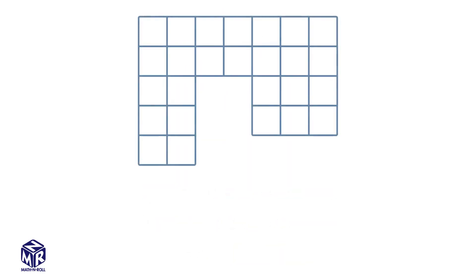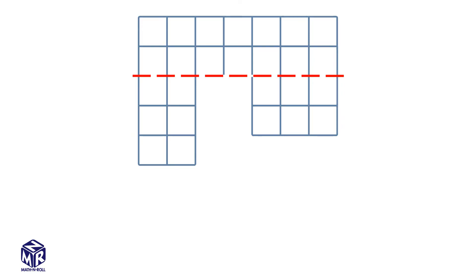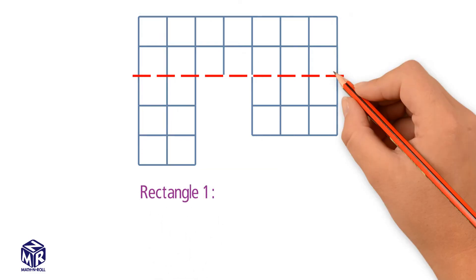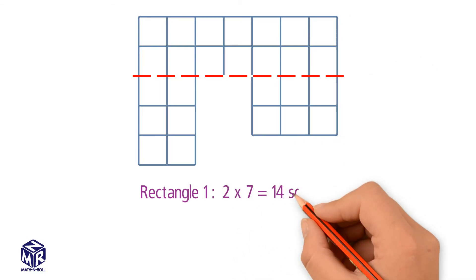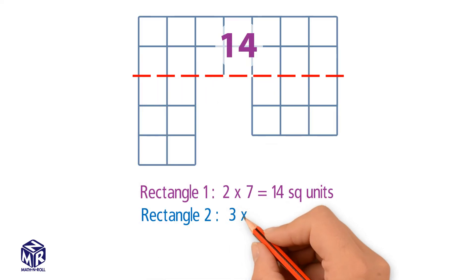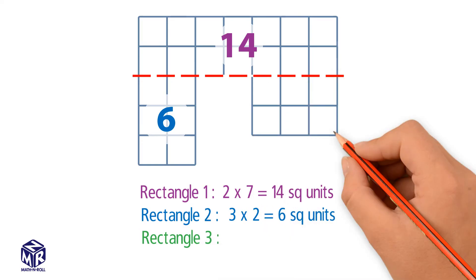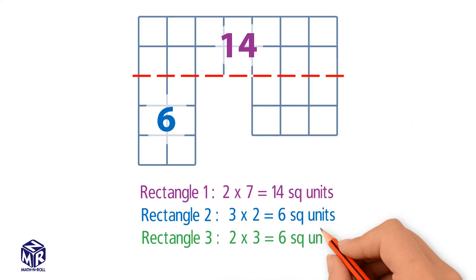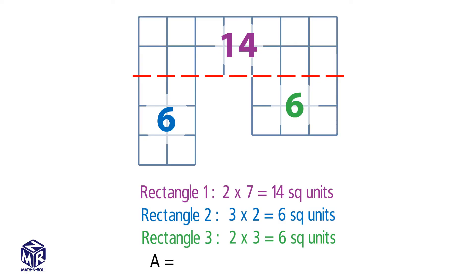Let's do another example. As you can see, drawing a horizontal line creates three smaller rectangles. We do the same thing as before: find the areas of the smaller rectangles and add them up. The first rectangle is a 2 by 7 rectangle, so 2 times 7 equals 14 square units. The second rectangle is a 3 by 2 rectangle, so 3 times 2 equals 6 square units. The last rectangle is a 2 by 3 rectangle, so 2 times 3 equals 6 square units. 14 plus 6 plus 6 equals 26 square units.